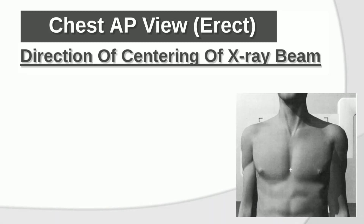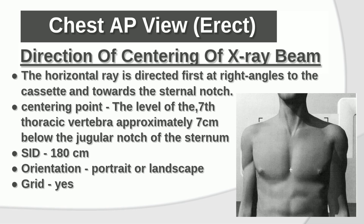Direction and centering of X-ray beam: The horizontal ray is directed at right angles to the cassette and toward the sternal notch. Centering point is at the level of the seventh thoracic vertebra, approximately seven centimeters below the jugular notch of the sternum. Keep SID at 180 centimeters. Orientation: portrait or landscape. Always use a grid to enhance image quality.